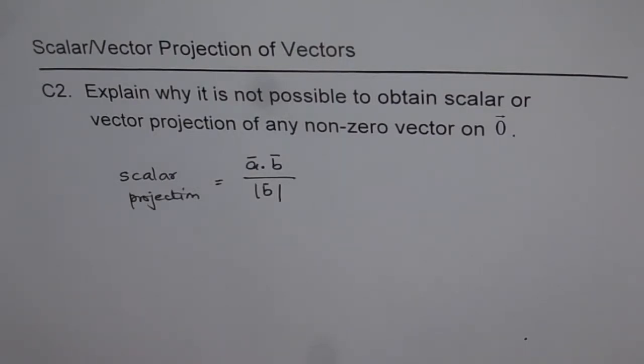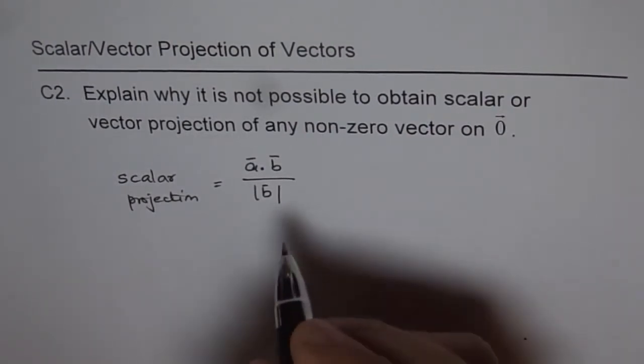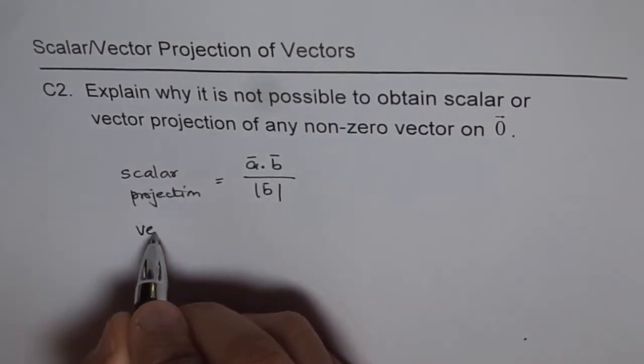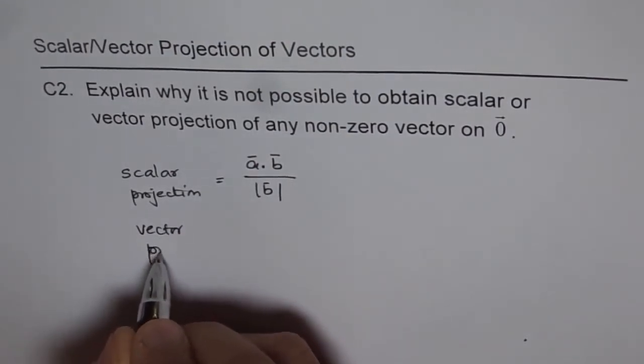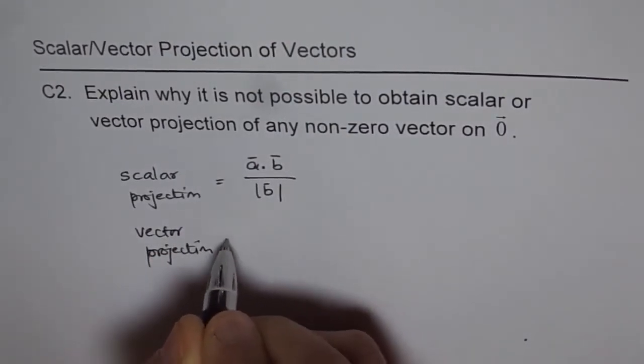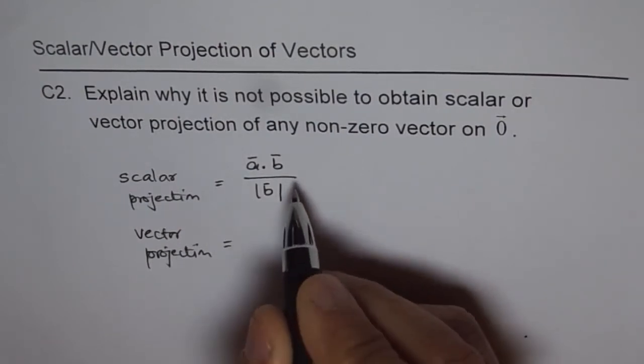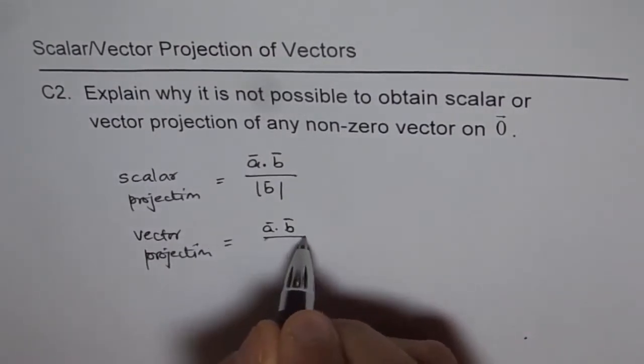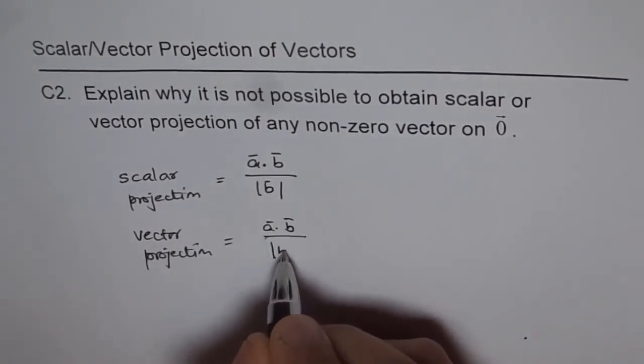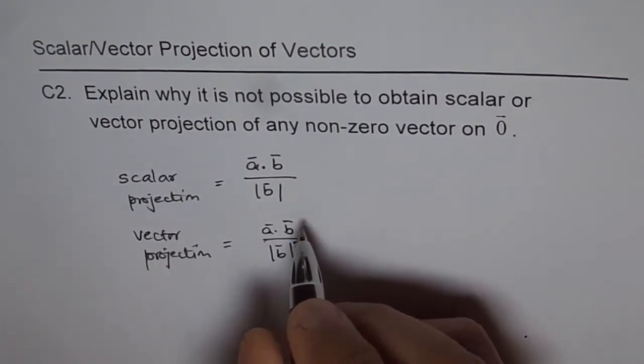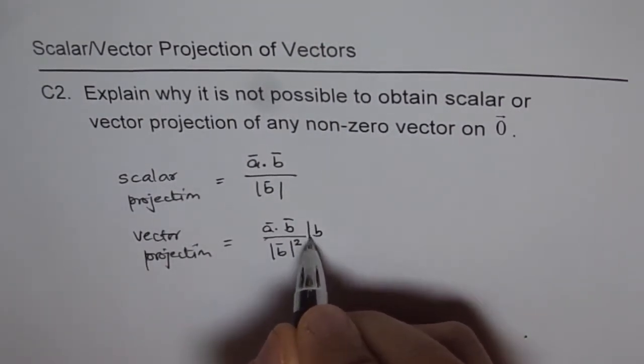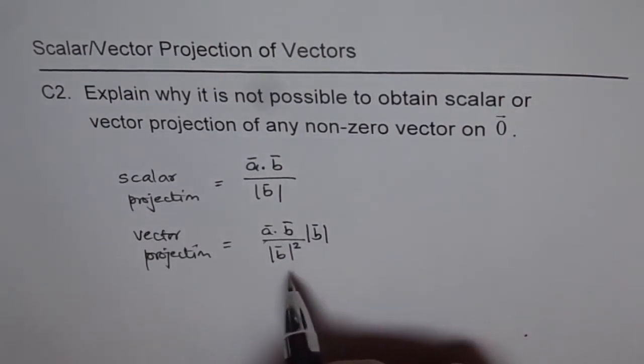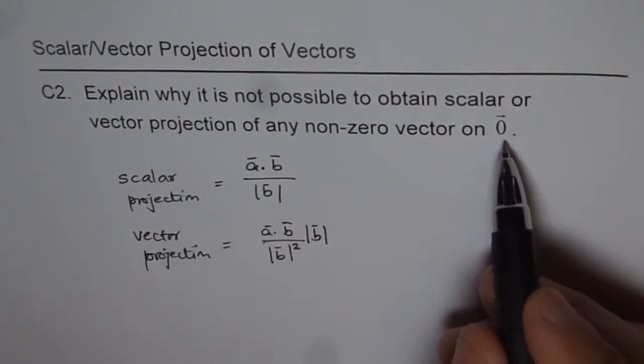Similarly, if we have a formula for vector projection, then what is that formula? Vector projection is the same formula with a direction in the unit vector. So it is like A dot B over magnitude of B square in the direction of vector B. Now here also we have magnitude of B in the denominator and our magnitude is zero. You can't divide by zero. It is invalid.